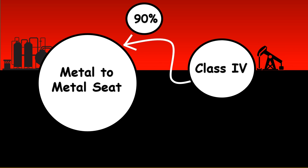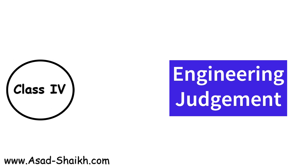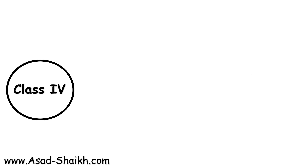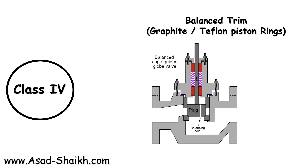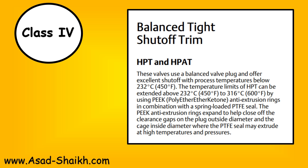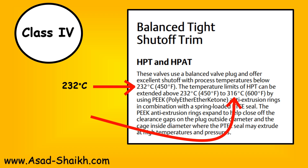90% of applications will usually have a class 4 leakage rate. However, class 4 also requires certain engineering judgment. For example, with a balanced trim design, you might have graphite or PTFE piston rings — and since these are not metal, they have a limiting temperature. For example, Fisher HPT and HPAT valves with piston rings can go up to 232°C, or up to 316°C with an extended PEEK option. Engineering judgment is required for higher temperature cases — you may need to go for an unbalanced design or explore other options.